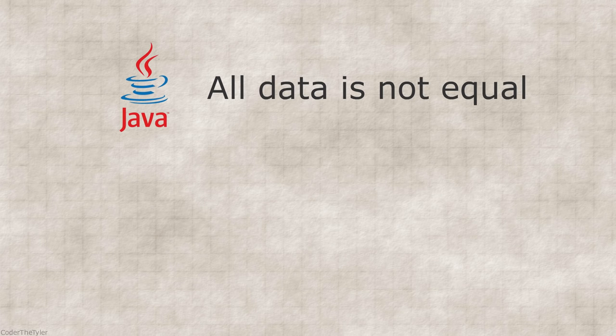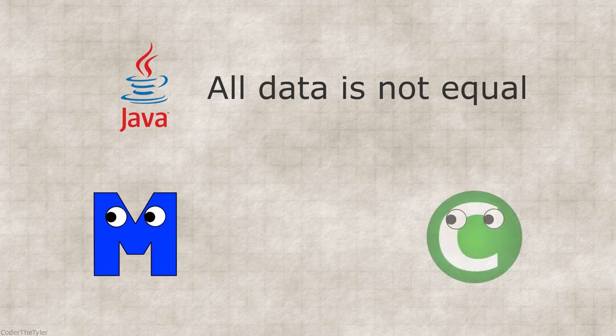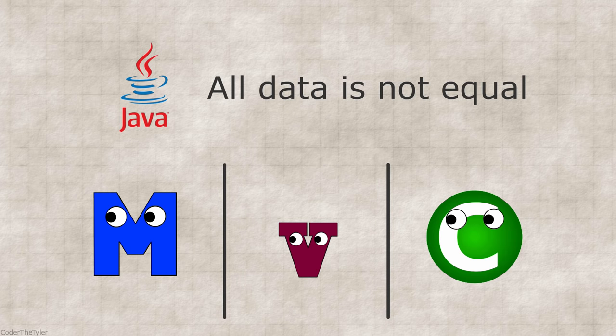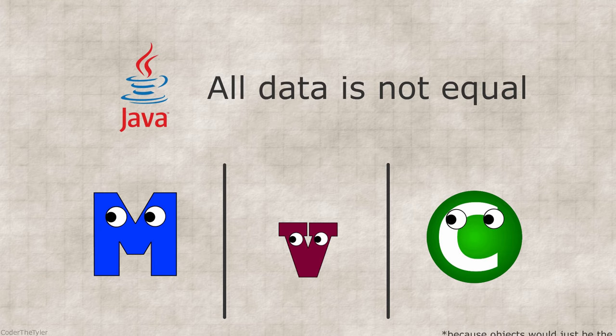Java doesn't treat all data equally. Methods are methods, classes are classes, and variables are variables. If it wasn't this way, there would really be no point in calling Java an object-oriented language.